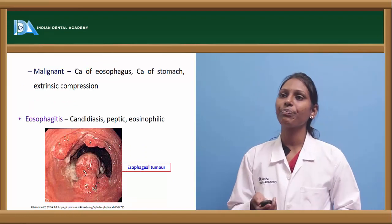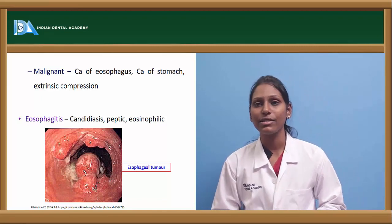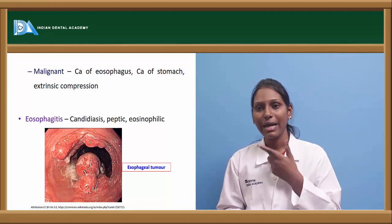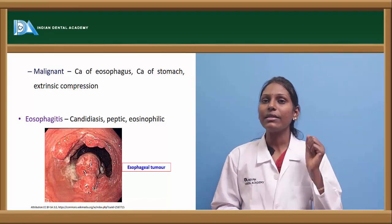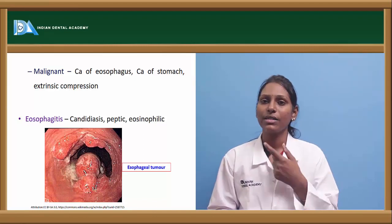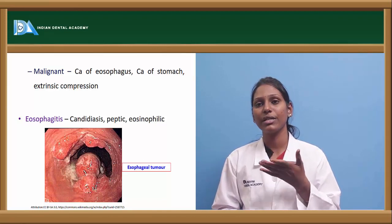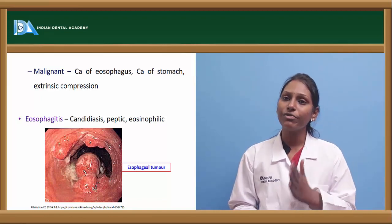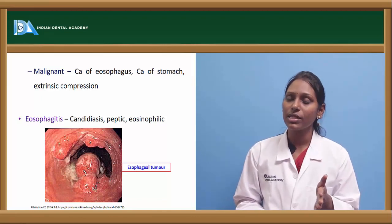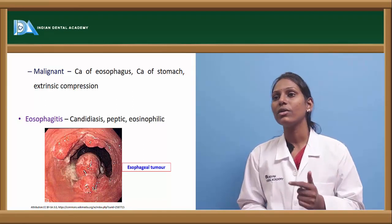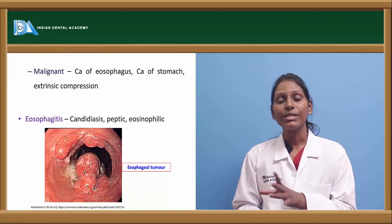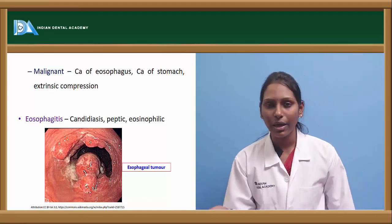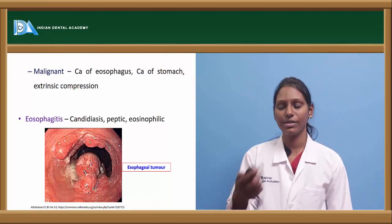Coming to malignancies, carcinoma of the esophagus and carcinoma of the stomach can cause strictures. Extrinsic compressions — from an enlarged thyroid, lymph nodes, or mediastinal carcinoma from the outside — can also lead to dysphagia. Esophagitis, which is inflammation of the esophagus due to candidiasis, peptic causes, or eosinophilic esophagitis, is usually associated with odynophagia rather than dysphagia. However, odynophagia can ultimately lead to dysphagia, hence esophagitis is also one of the conditions causing dysphagia.